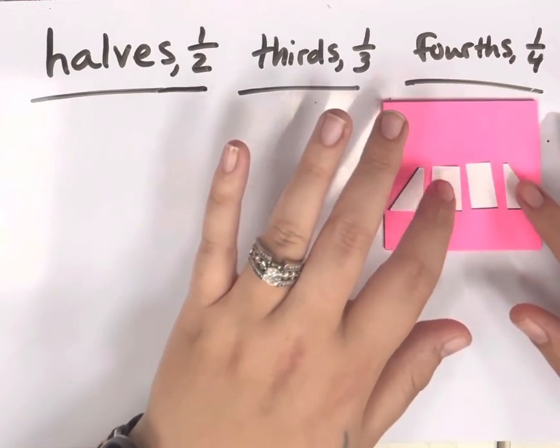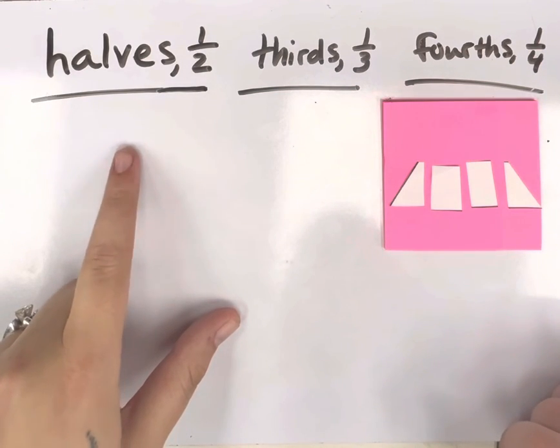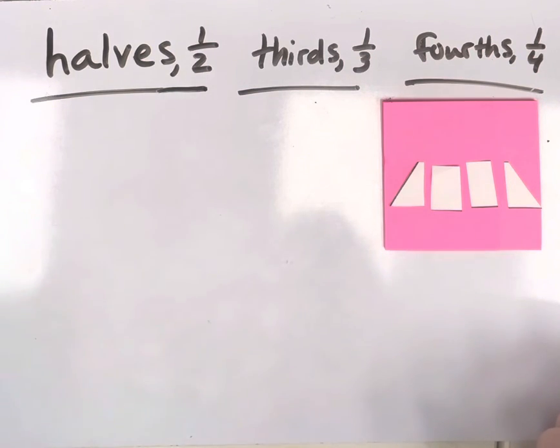Fractions must be equal in size. So a trapezoid is only able to be cut into halves. Okay, hopefully this helped.